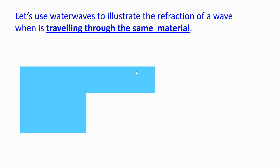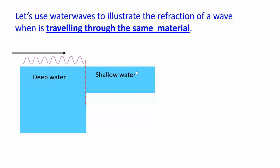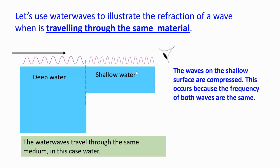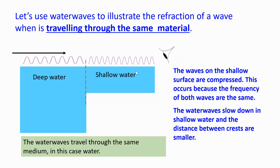Let's use water waves to illustrate refraction of a wave traveling through the same material. Here we have a pool with two different water levels — a deep water section and a shallow water section. We create a wave on the surface of the deep water traveling toward the shallow section. The waves on the shallow surface are compressed because the frequency of both waves is the same. The water waves slow down in shallow water, and the distance between crests is smaller.